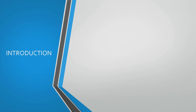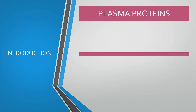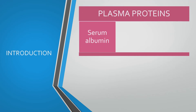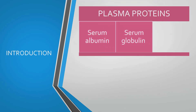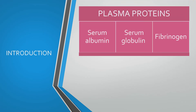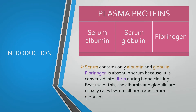Let's start with the introduction part. The plasma proteins are serum albumin, serum globulin, and fibrinogen. Serum contains only albumin and globulin. Fibrinogen is absent in serum because it is converted into fibrin during blood clotting.